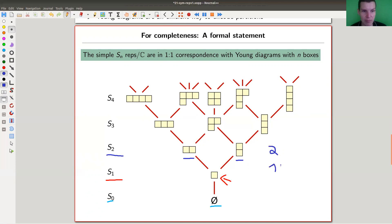And how many ways do I have to put one box? Well, there's one, I guess. S_2 has two boxes, and there are two ways to put those two boxes,